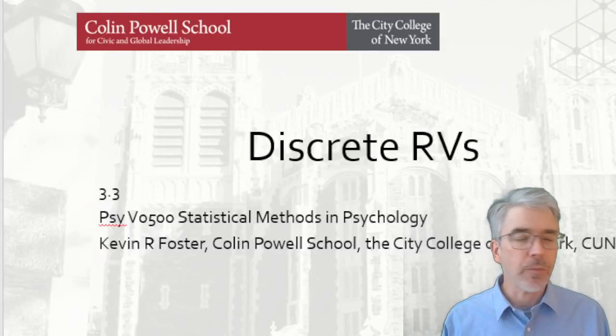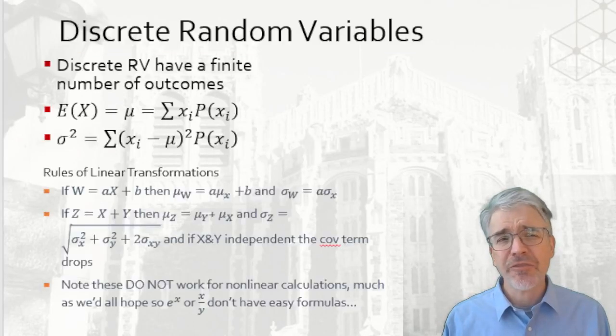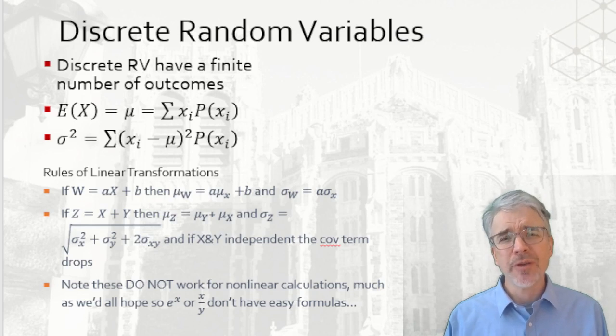We'll talk about discrete random variables. These have a finite number of possible outcomes, so they could be very simple, coin flip. Either the outcome is heads or tails.